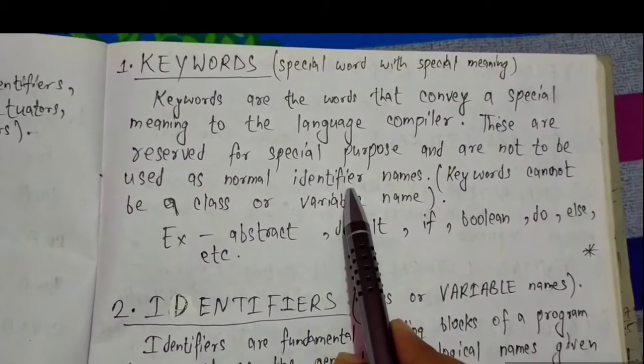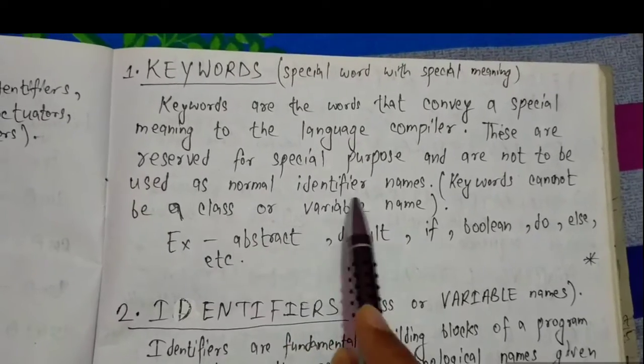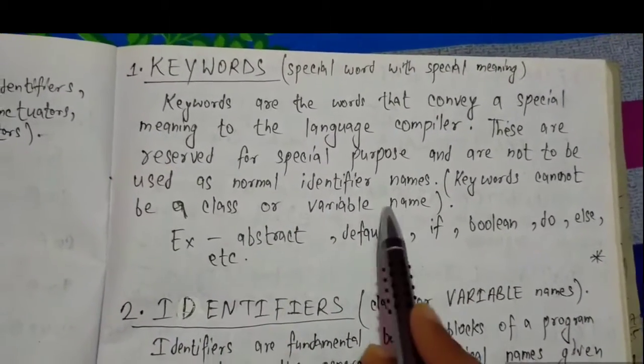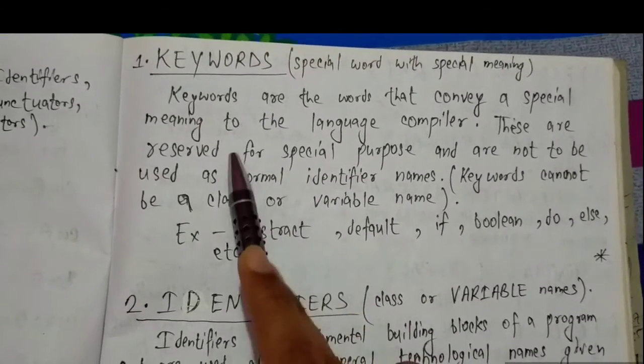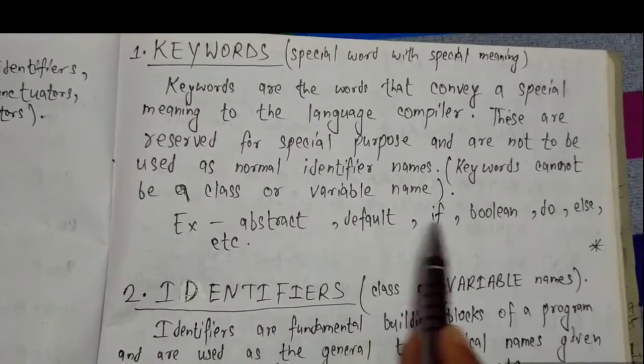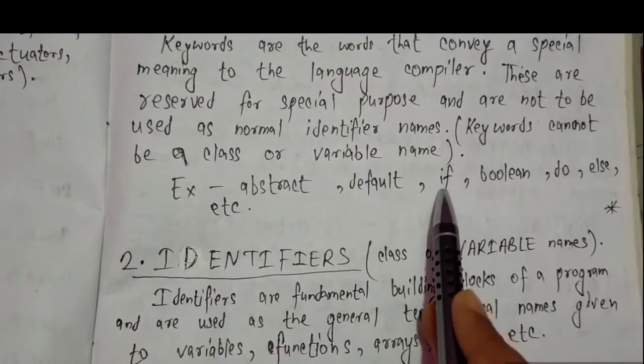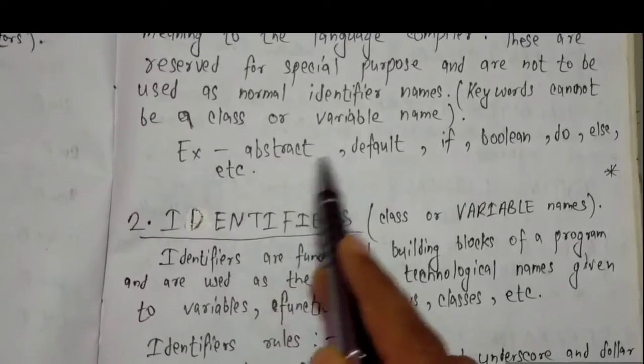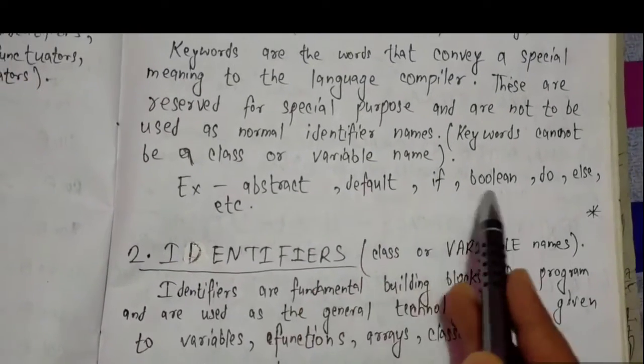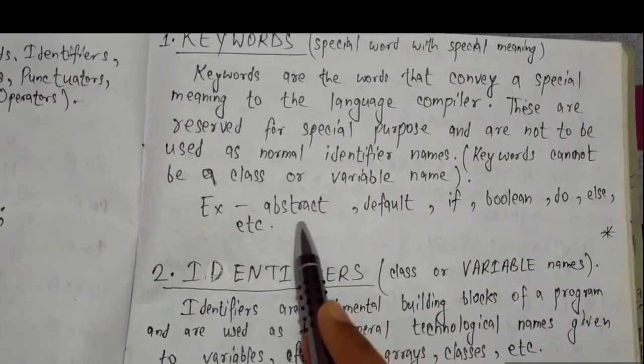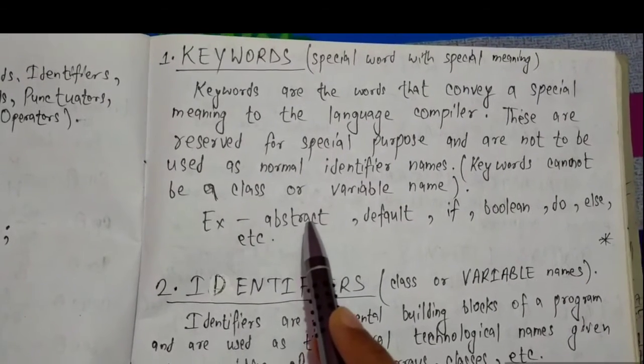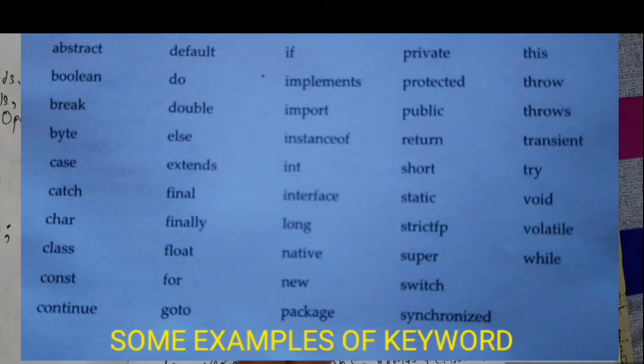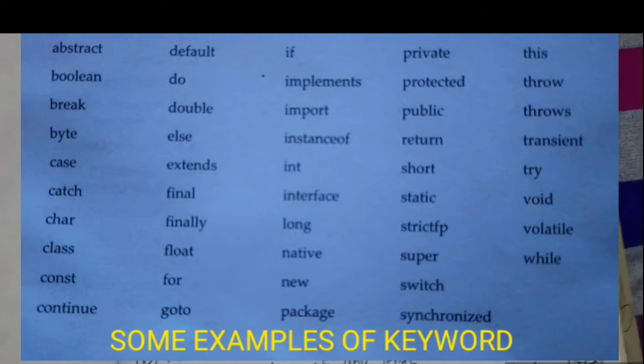Here identifier means the class name or a variable name. Later we will discuss what is class and variable. Examples of keywords: abstract, default, if, boolean, do, else, etc. Now on the screen you can see many more examples of keywords, so please take a screenshot.